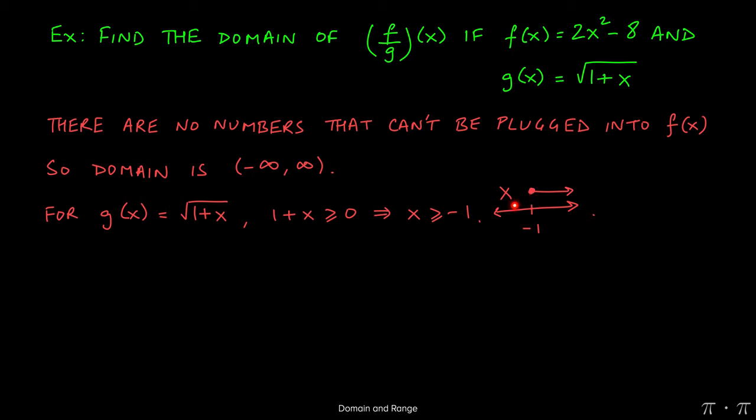Anything to the left of negative 1, say negative 2, if I were to plug negative 2 into this function, 1 minus 2 will give me negative 1. I cannot find the square root of a negative number. So this indicates that the domain will be from negative 1 to infinity with a square bracket around negative 1 because I can find the square root of negative 1.